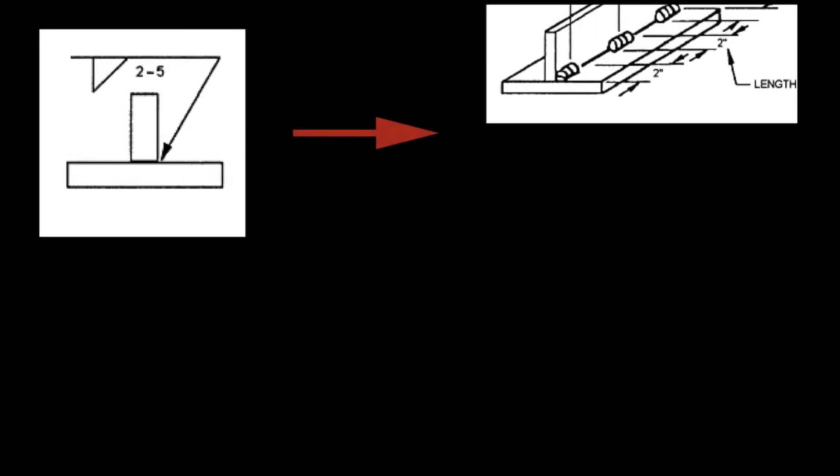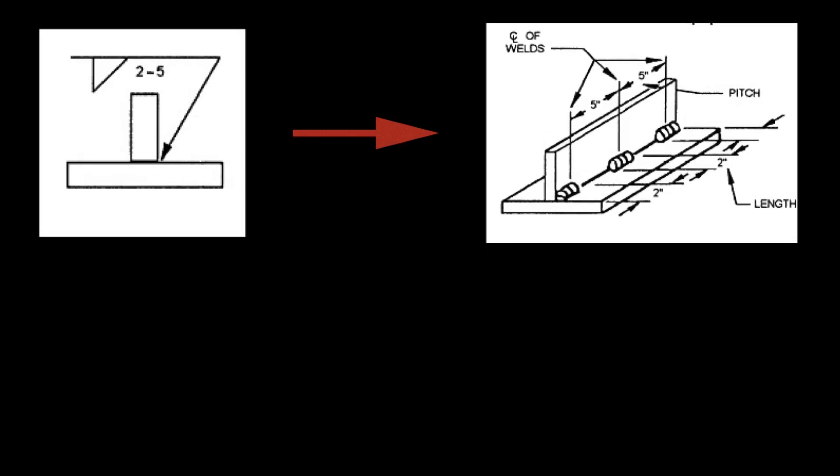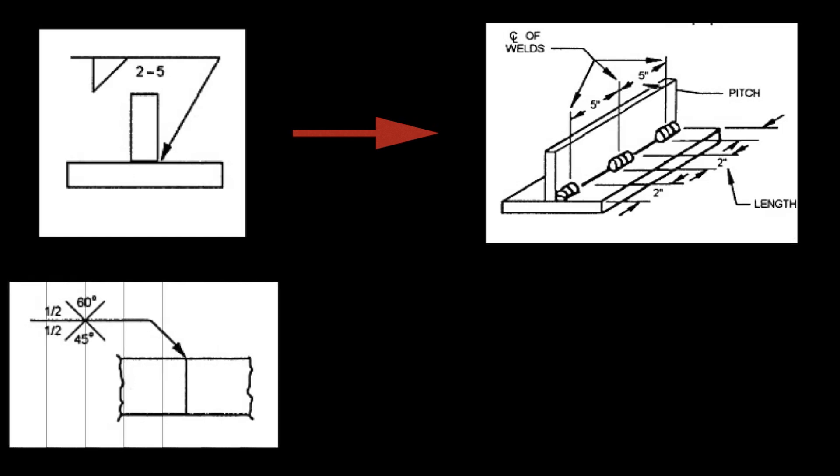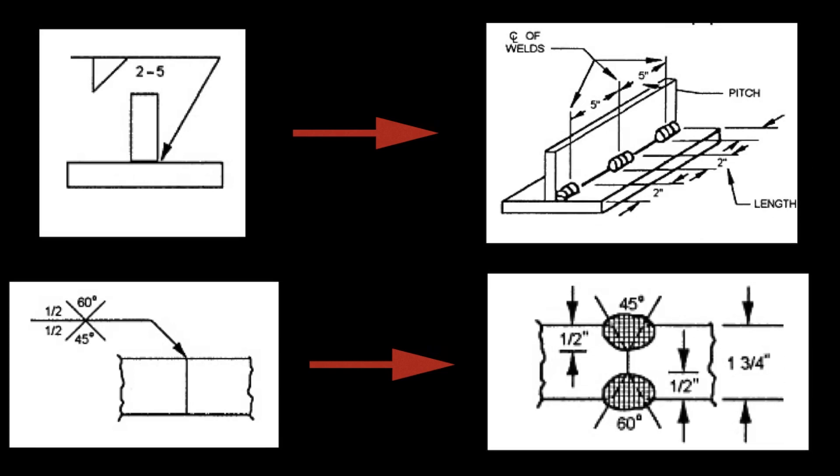Here third one is stitch welding at fillet joint. Here two indicates the length of the weld and five indicates the distance between adjacent welds. Fourth one is double groove butt joint. Here 1/2 indicates the depth of the penetration and 45 and 60 indicates the included angle at arrow side and non-arrow side respectively.